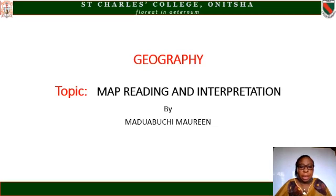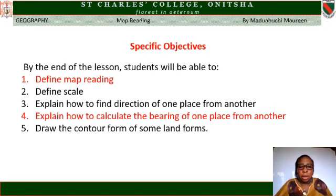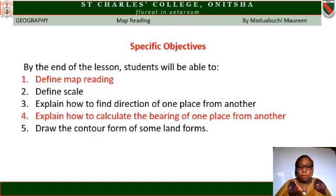Our topic today is Map Reading and Interpretation. Let us look at the specific objectives. By the end of the lesson, you students will be able to define map reading, define scale, explain how to find the direction of one place from another, explain how to calculate the bearing of one place from another, and draw the contour form of some landforms.